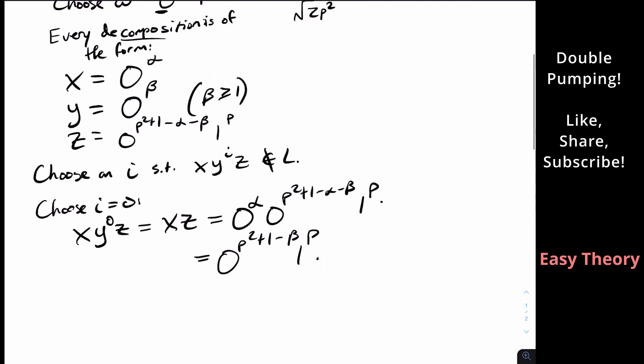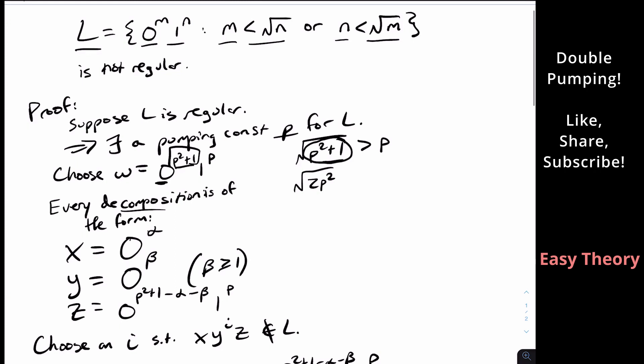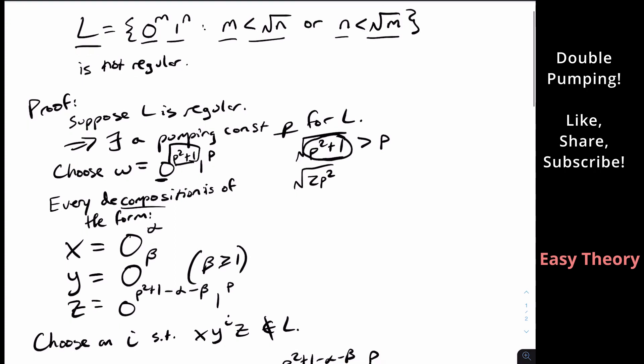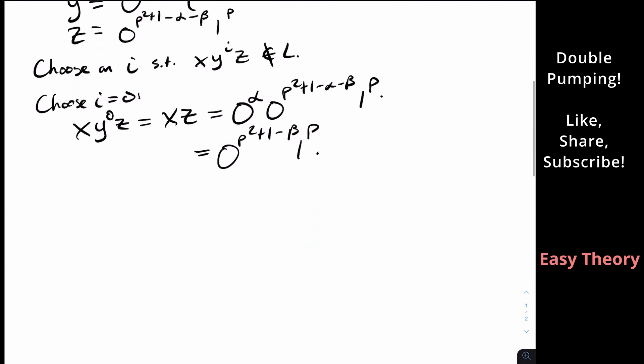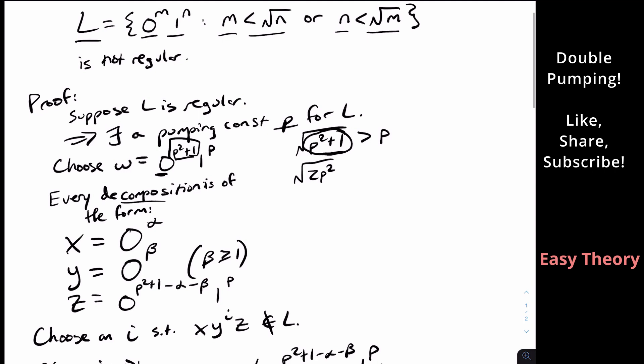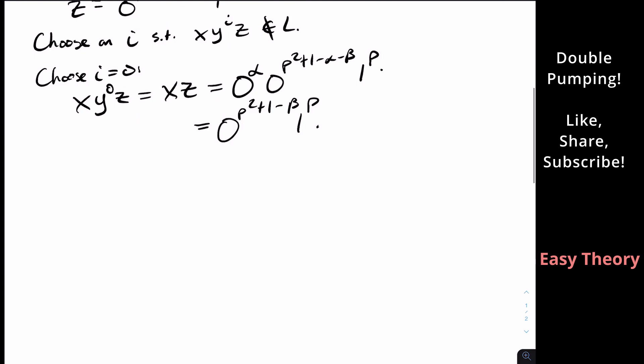in order to be in the language, you have to meet either one of the two conditions. Either the number of zeros is less than the square root of the number of ones, or the number of ones is less than the square root of the number of zeros. So the thing that you should take note here, in particular with this language, is that if we fail one condition, it still could be true that the other condition is true. So we need to be able to show that both conditions are false.